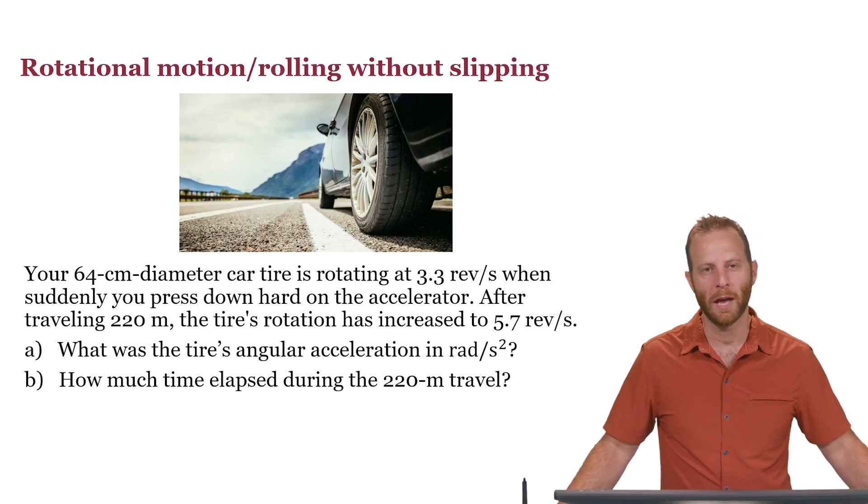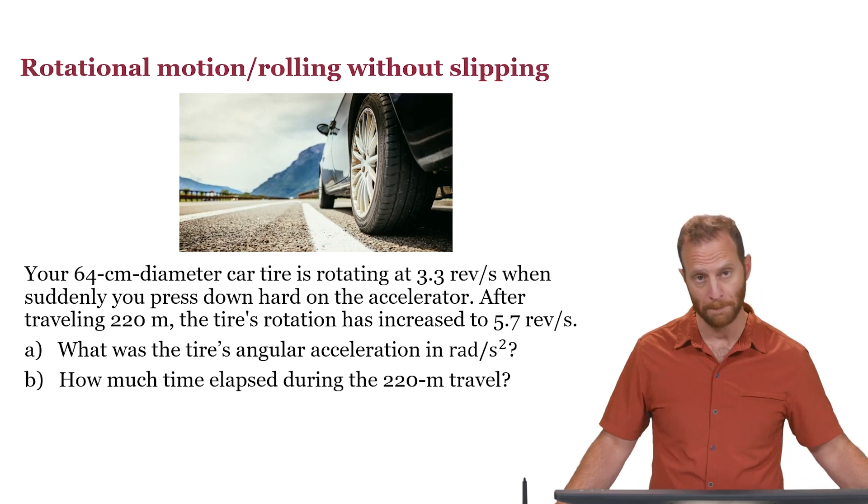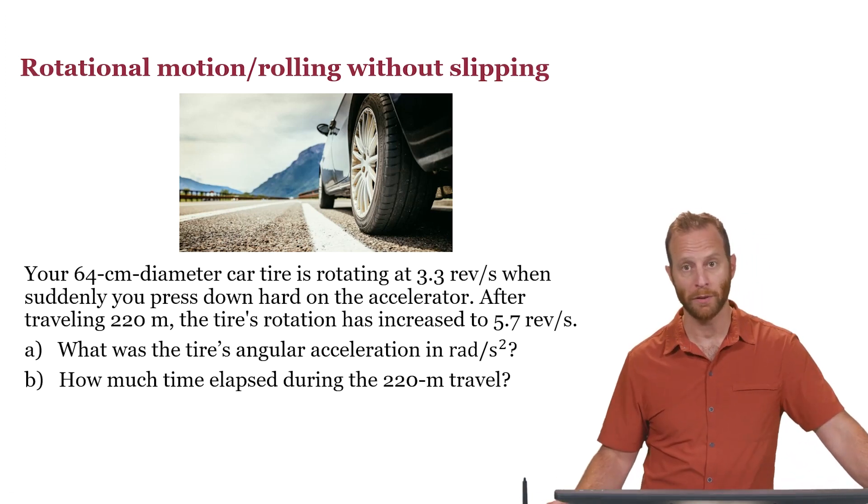Your 64 centimeter diameter car tire is rotating at 3.3 revolutions per second when suddenly you press down hard on the accelerator. After traveling for 220 meters, the tire's rotation has increased to 5.7 revolutions per second. Using that information, we can figure some things out.